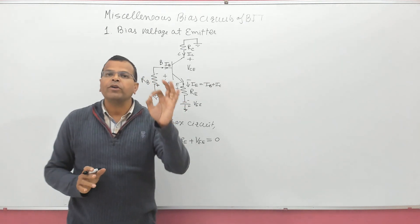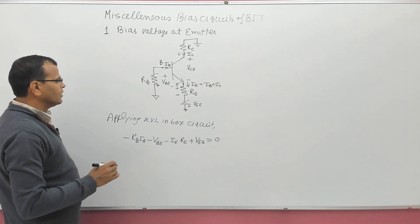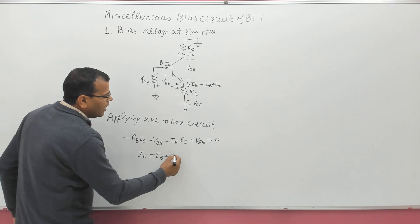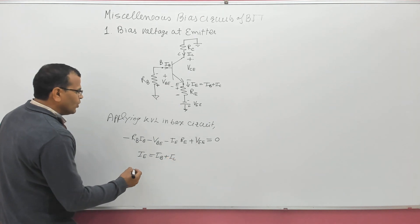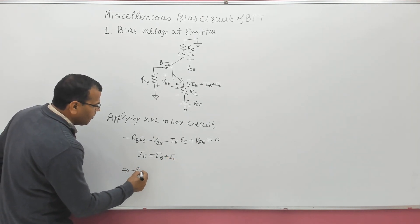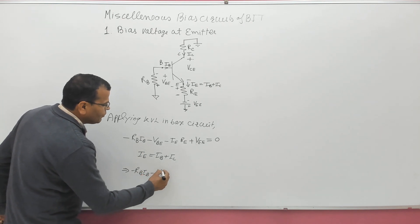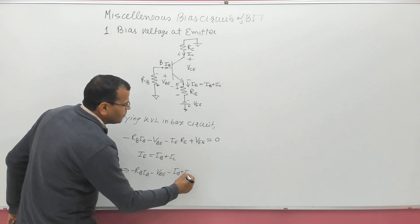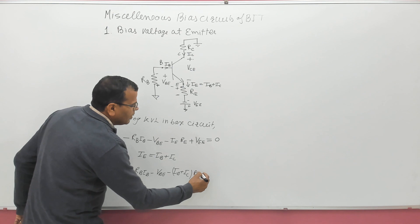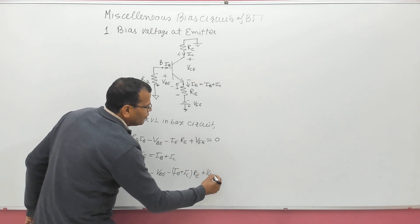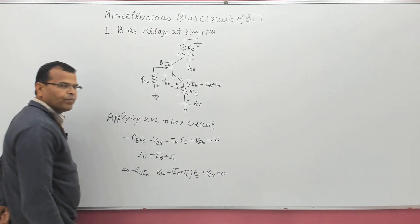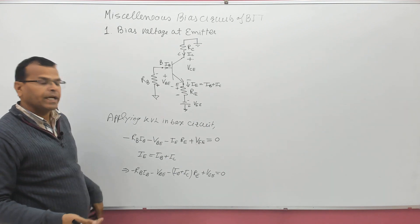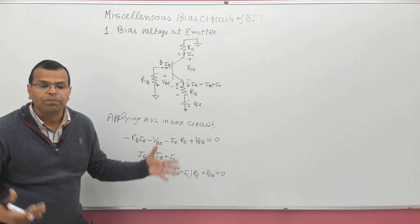That is the KVL equation for the base circuit. We know IE = IB + IC, so this gives: minus RB × IB minus VBE minus (IB + IC) × RE plus VEE = 0. This is the relationship for the base circuit — call it equation 1.